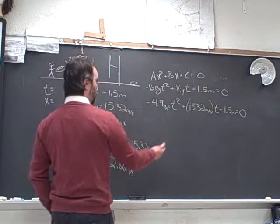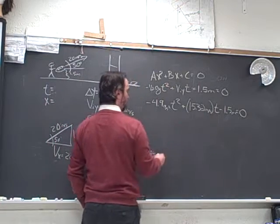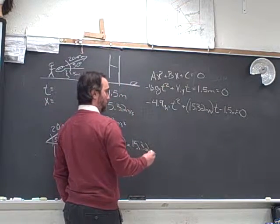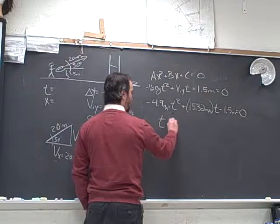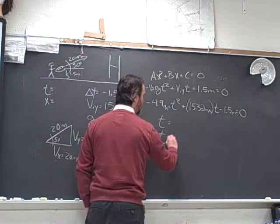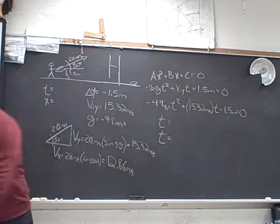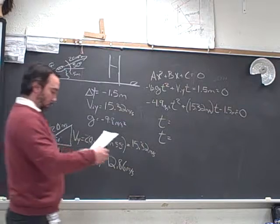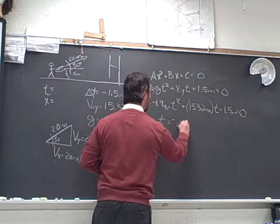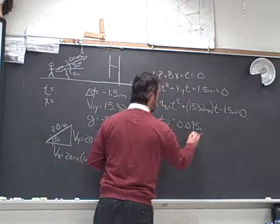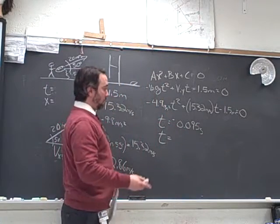And so, we're going to have two solutions to this when we plug in to the quadratic. We're going to have two times, and actually both times will be meaningful, one more so than the other. The times that we get are going to be negative 0.095 seconds. Now that's not the time it takes to hit the ground.